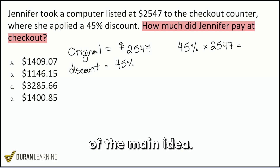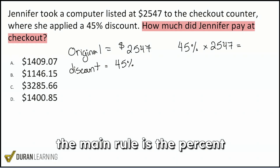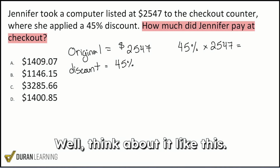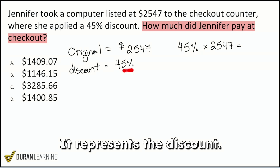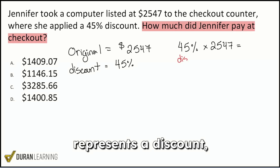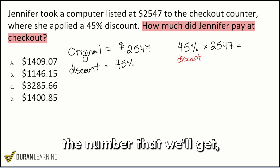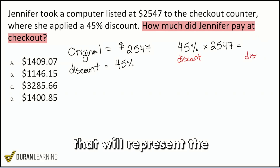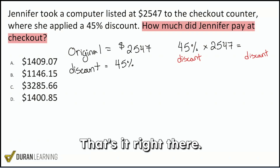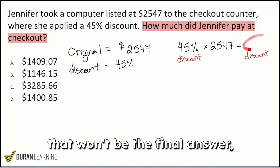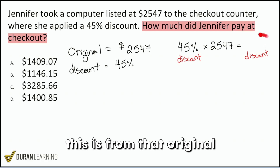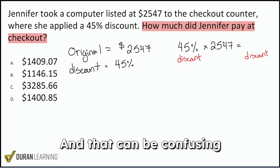The reason that won't give us our answer is because of the main rule behind percentages: the percent that you apply is the result that you get. What does the 45% represent? It represents the discount. So the result you get will represent the discount, not the final price. If you calculate with 45%, whatever number you get will be the discount amount — and then you'd have to subtract it from the original amount to get the final price, which can be confusing to remember.